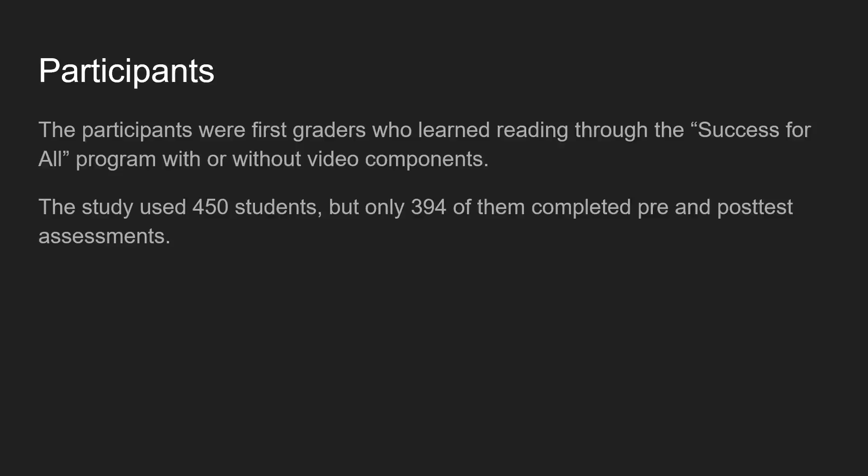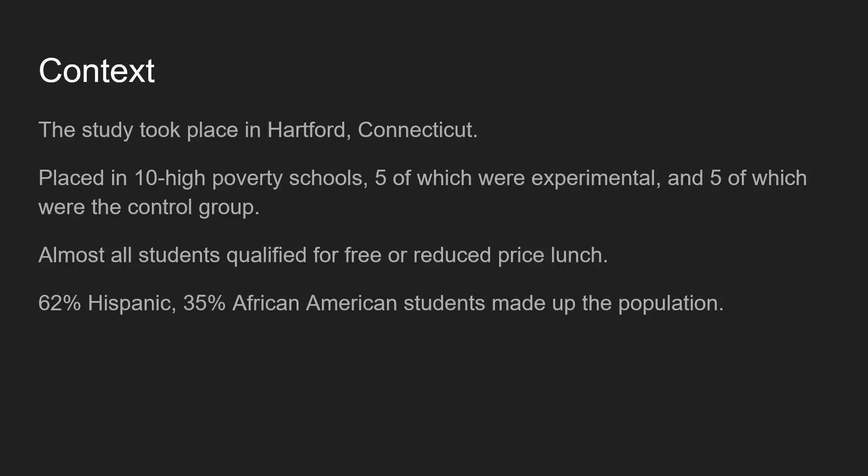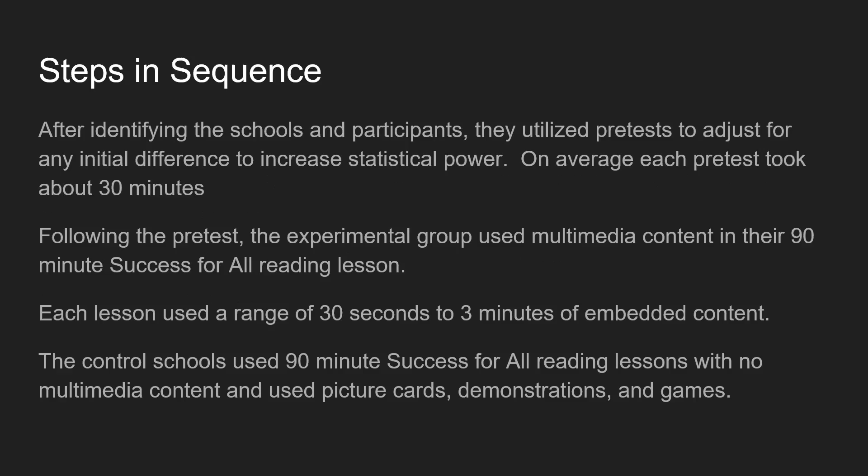Now we're going to talk about the context. The study took place in Hartford, Connecticut, in 10 high-poverty schools — five experimental and five control. The population had almost all students who qualified for free and reduced lunches, and the racial breakdown was about 62% Hispanic, 35% African American, and the rest white.